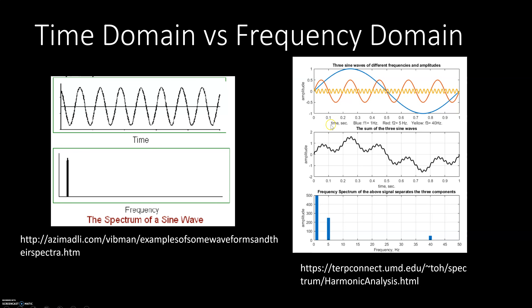Now let's move on to a little bit more complicated signals. On the right we have a signal composed of three separate signals — three different frequencies and amplitudes that are superimposed, and the resulting signal is the graph in the middle. If we look at what the signal looks like in the frequency domain, we get three different lines on the x-axis representing the frequencies present in the signal. In order to go from the time domain to the frequency domain, we have a formula, and the process is called Fourier transform.